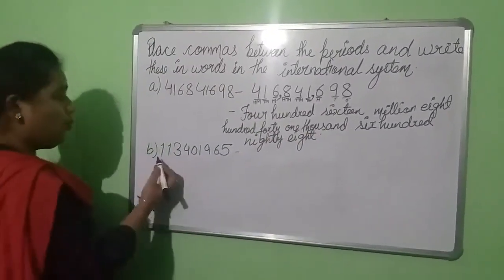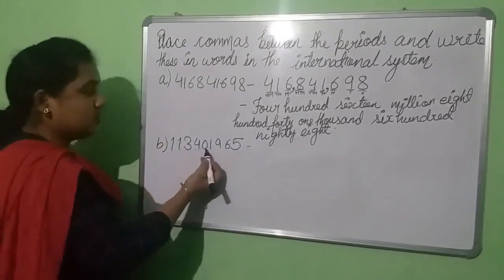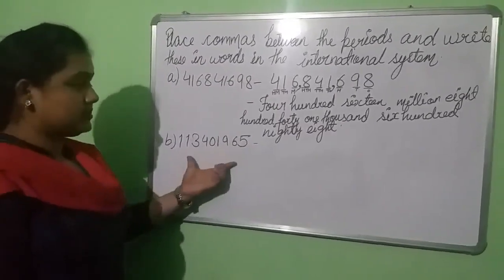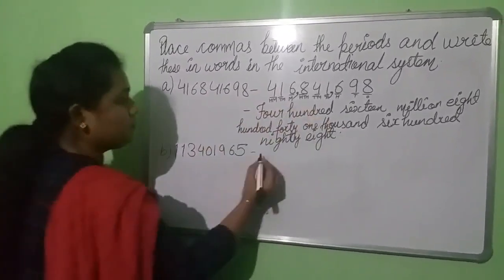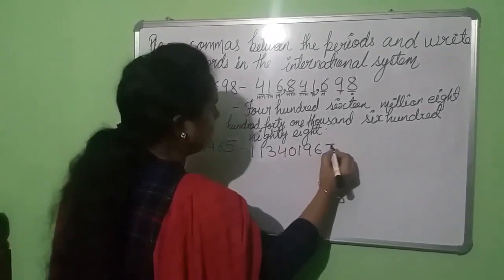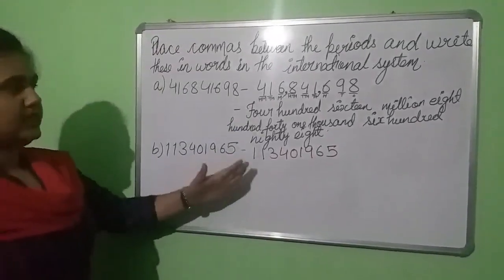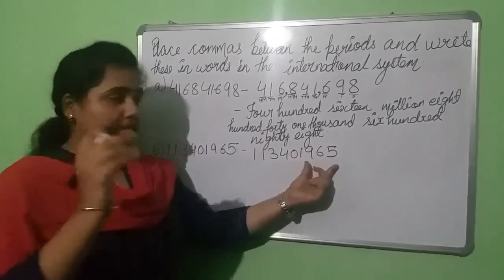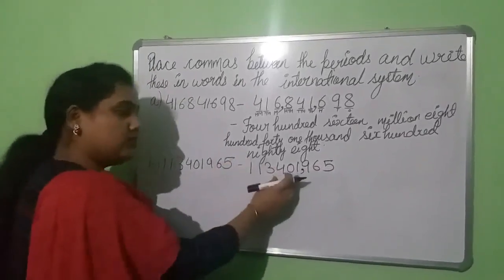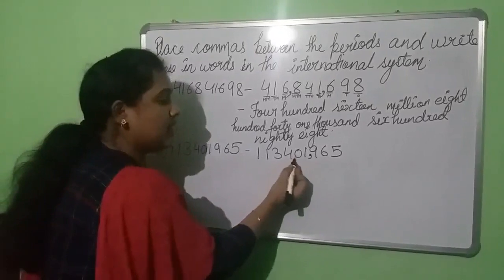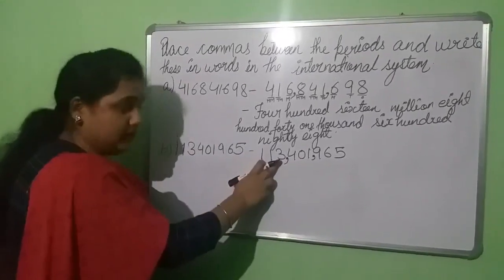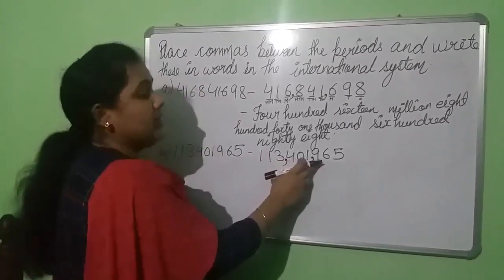The next number is 1, 1, 3, 4, 0, 1, 9, 6, 5. So we are going to write this number with commas. First of all, copy the number. Now we are going to put the commas. As we know that in the ones period we have 3 place values, so we put a comma after 3 numbers. And in the thousands period also we have 3 place values, so once again after 3 numbers. We can read this number as 113,401,965.